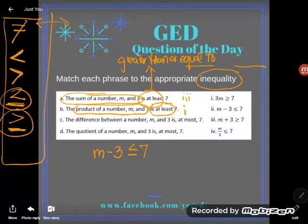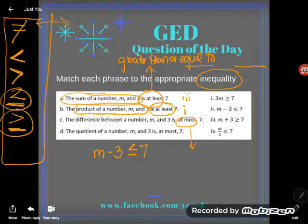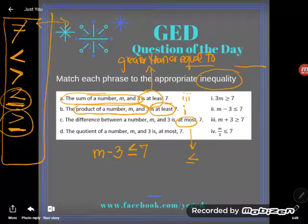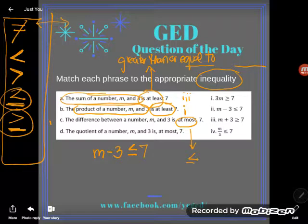So careful. It's, again, the opposite of what students would expect. If I say at most, that's actually less than or equal to. So this is M minus 3 is less than or equal to 7. This one is 2. Okay?